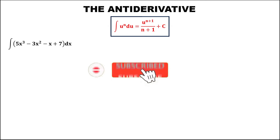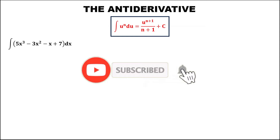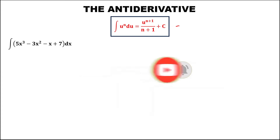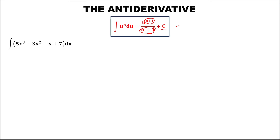Let's have this problem. For this antiderivative, we use the formula: the integral of u to the power n du is equal to u to the power n plus 1, over n plus 1. Take note that the exponent and the denominator must be equal to n, plus c.